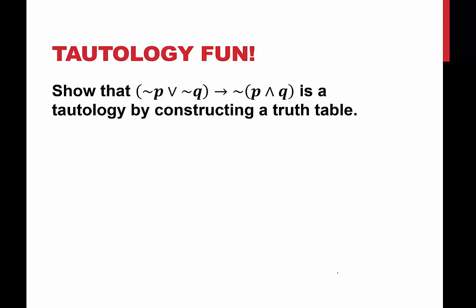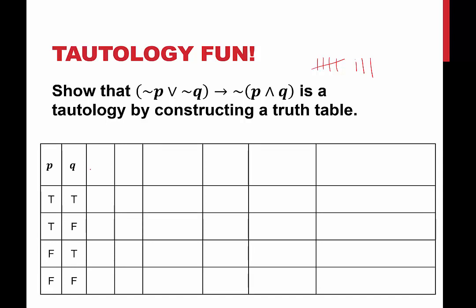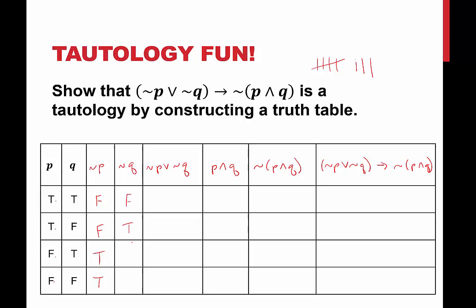Did you get all trues? Let's see. We need four rows because we have two simple statements. We need a column for p, a column for q, and we need negations of each. We have a disjunction, then a conjunction, then the negation of the conjunction, then the whole statement — so we need eight columns. I need not p, not q, then not p or not q, then p and q, and then the negation of that. Not p will be false, false, true, true. Not q will be false, true, false, true.